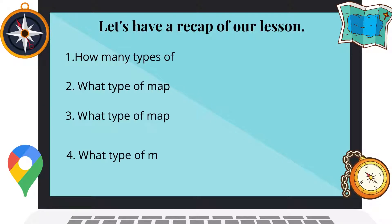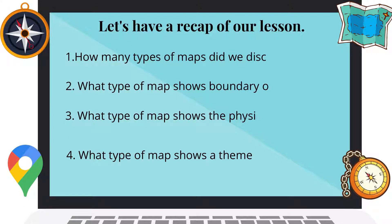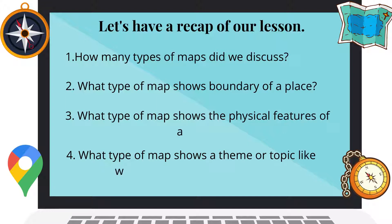Now let's have a recap of our lesson. How many types of maps did we discuss? You get it right — it's three. What type of map shows the boundary of a place? It's a political map. What type of map shows the physical features of a place? It's a physical map. And what type of map shows a theme or topic like the relative condition of a place? It's a thematic map.